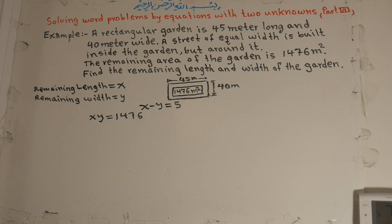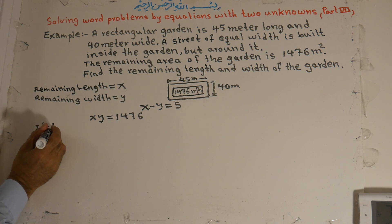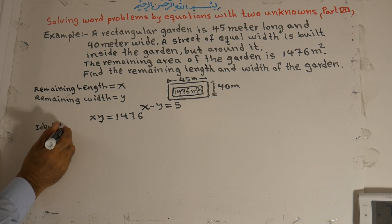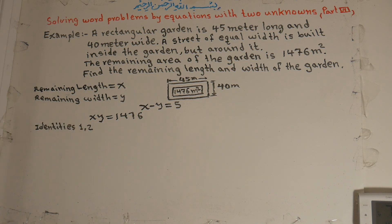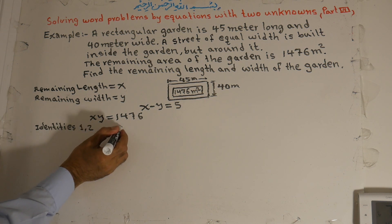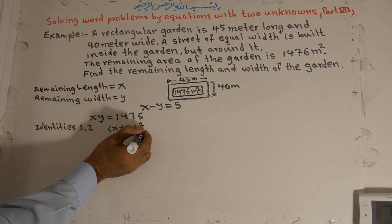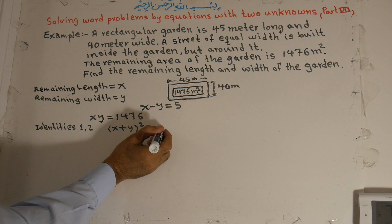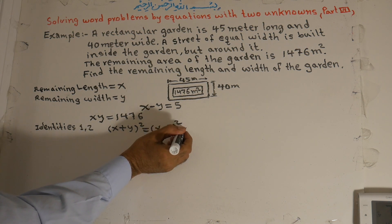According to identities 1 and 2 from our previous lessons, we have the formula: (x + y)² is equal to (x − y)² plus 4xy.